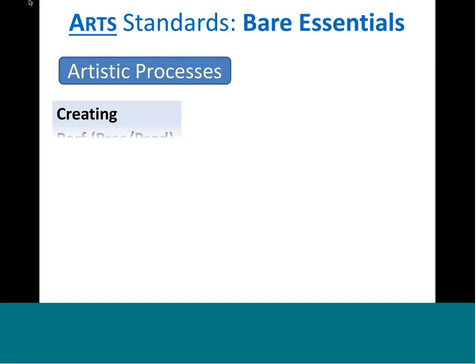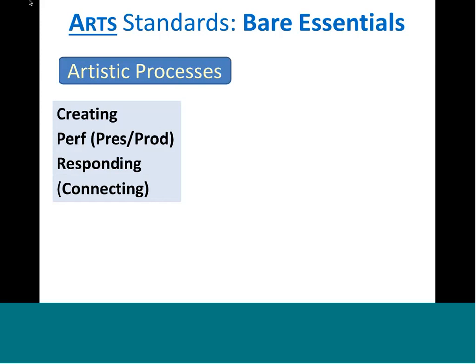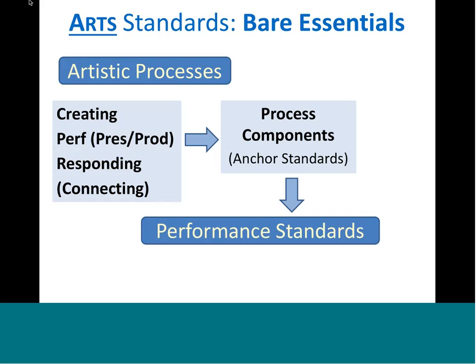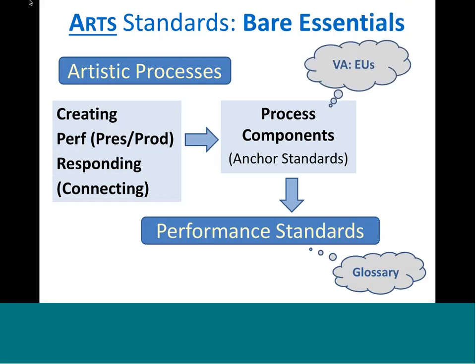So I gave you the bare essentials: the artistic processes, the different names for those, and the process components. I'm going to talk about anchor standards soon. The process components give us a basis for the performance standards — every performance standard is lined up with a process component. So it's asking: what are we going to do with 'evaluating' at grade 4, grade 5, grade 6? There's also a glossary. Questions I've been asked would have been answered had people referred to it. We developed a thoughtful glossary because even within one art form, we tend to use the same term differently depending on who trained us.